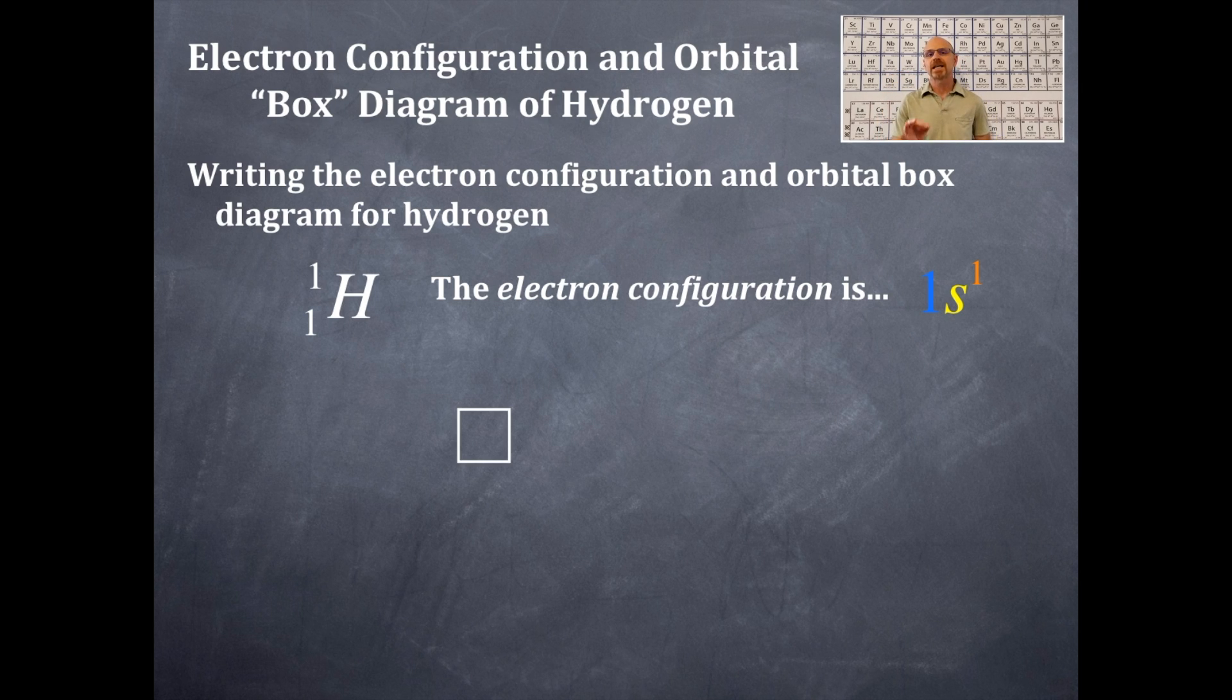So we're going to write a single box. And that single box is an orbital. The maximum number of electrons that you can fit in an orbital is two. Don't forget about that.